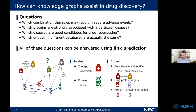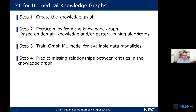Given that we can do link prediction in a knowledge graph, how can we use this in drug discovery? For example: which combination therapies may result in severe adverse events? Which proteins are strongly associated with a particular disease? Which entities in different biomedical databases are actually the same? All of these questions can be answered using link prediction. The typical process is to first create the knowledge graph from biomedical databases. Getting a good, comprehensive, and clean knowledge graph representation is not to be underestimated as a problem.